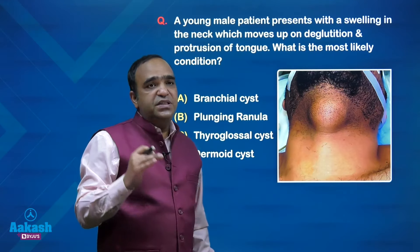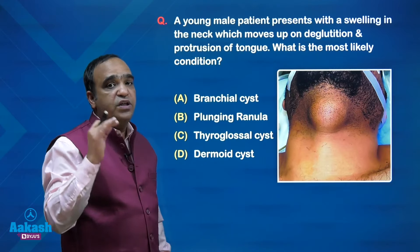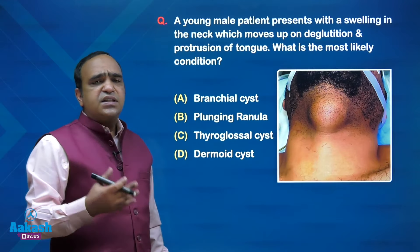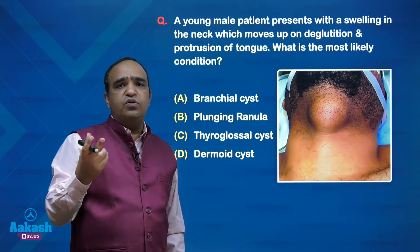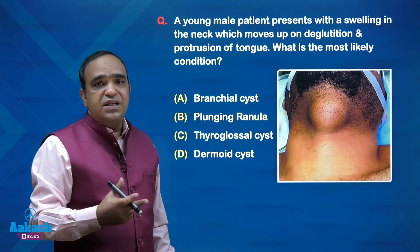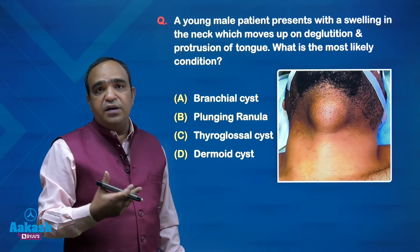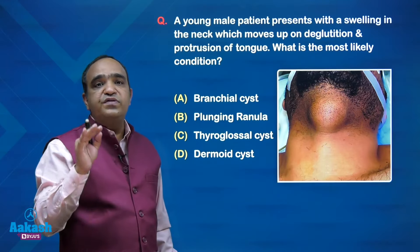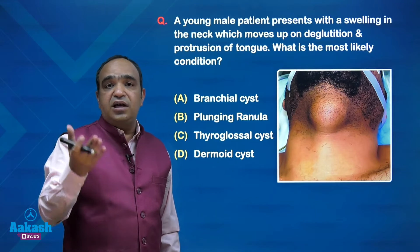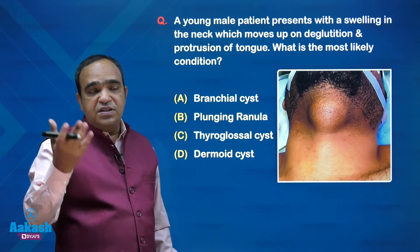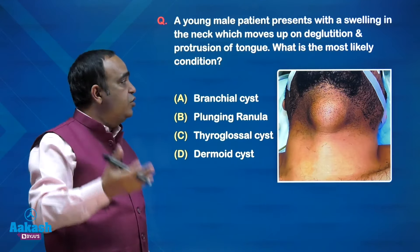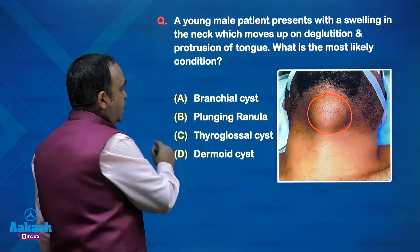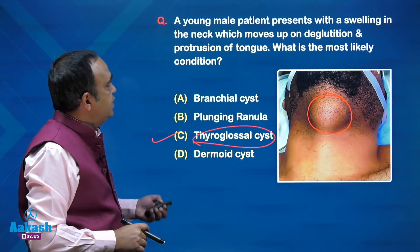Next: a young male presents with a swelling in the neck that moves up on deglutition (swallowing) and on protrusion of the tongue — very easy and straightforward. Midline neck swellings: differentiate between thyroglossal cyst (a congenital remnant of the thyroglossal duct) and a goiter. Thyroid swelling moves only with deglutition, not with the tongue. A thyroglossal cyst, since the tract is attached to the foramen cecum at the base of the tongue, moves up on both deglutition and protrusion of the tongue. Answer: thyroglossal cyst.